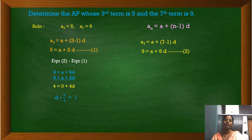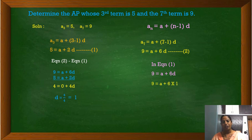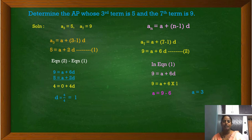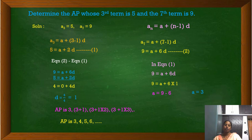Now we know D = 1. Substituting into equation 2: 9 = A + 6 × 1, so A = 9 − 6 = 3. We have the first term as 3 and common difference as 1. Hence, the AP is 3, 4, 5, 6, ... since the common difference is 1, the value increases by 1 each time.